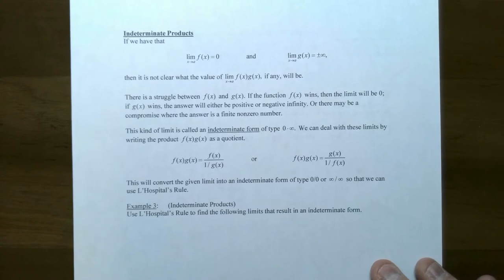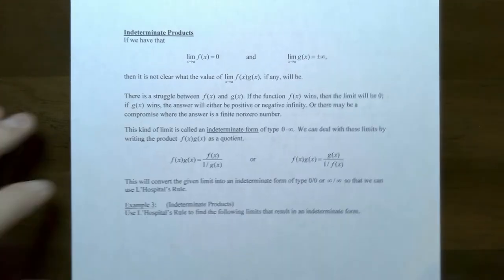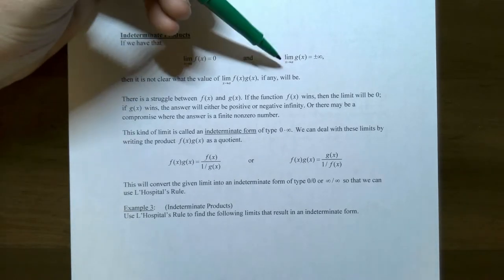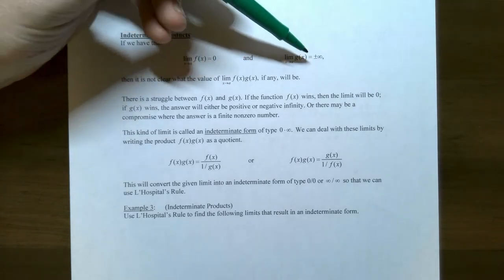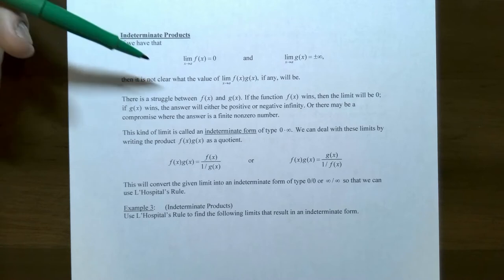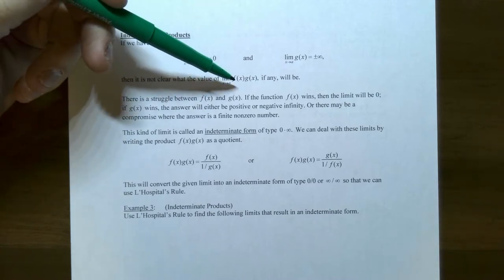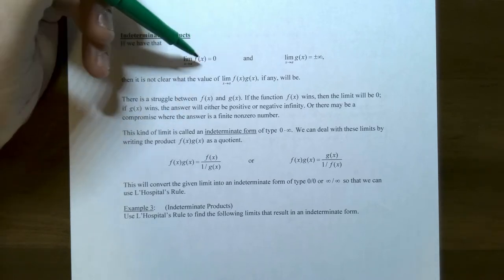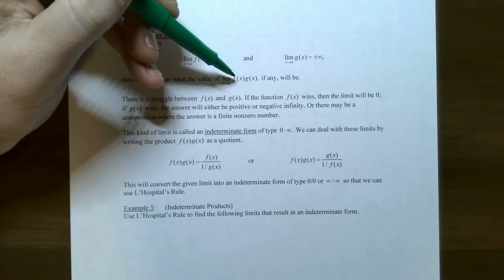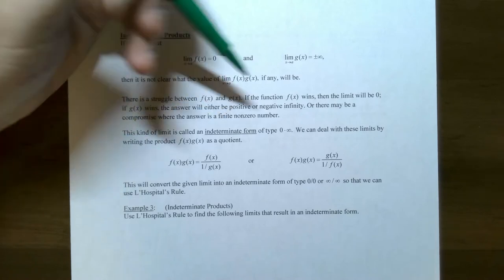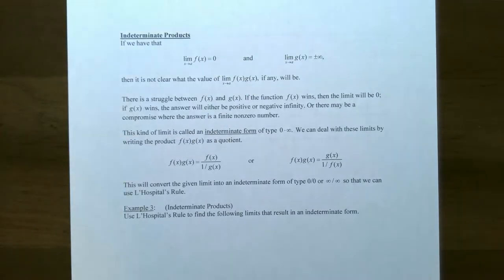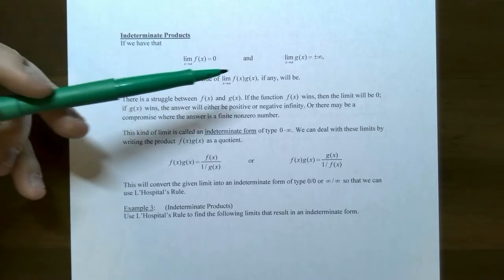Let's look at indeterminate products first. Suppose that the limit of f(x) as x approaches a is 0, and the limit of g(x) as x approaches a is either positive or negative infinity. Then it's not quite clear what the limit of f(x) times g(x) will be. There's a struggle between f(x) pulling the y-values towards 0, whereas g(x) is pulling the y-values towards an extremely large value, positive or negative. There may be some compromise where the answer is a finite non-zero number.